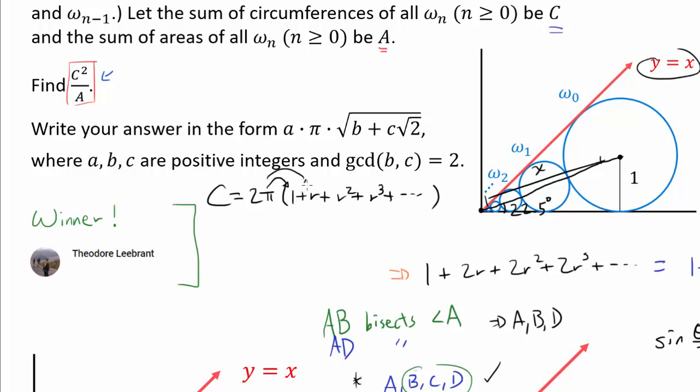Because we are going to have 2π + 2πR + 2πR² and so on. And this is 2π times 1 over (1 minus R) by the geometric series formula.